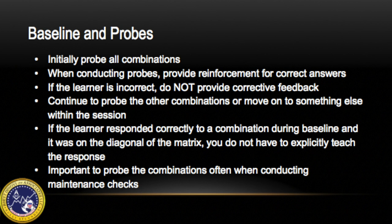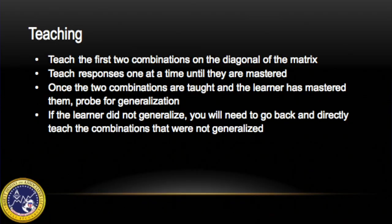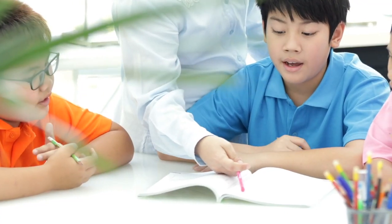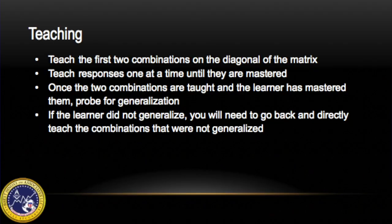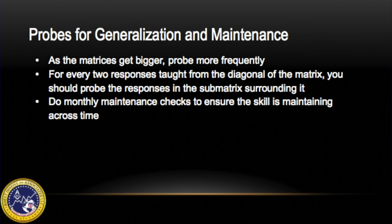If the learner is continuing to get responses incorrect, you can still provide reinforcement for sitting at the table, attending to the stimuli, or for working in general. If the learner responded correctly to a combination during baseline and it was on the diagonal of the matrix, you do not have to explicitly teach this response, but it is important to probe those combinations often during maintenance checks. Now that you have your baseline data, teach the first two combinations on the diagonal of the matrix one at a time until they are mastered. Once mastered, probe for generalization by testing the other combinations in the sub-matrix surrounding the diagonal. If the learner did not generalize, go back and directly teach the combinations that were not generalized. As the matrices get bigger, probe more frequently — for every two responses taught from the diagonal, probe the responses in the surrounding sub-matrix. Continue to do monthly maintenance checks to ensure the skill is maintaining across time.